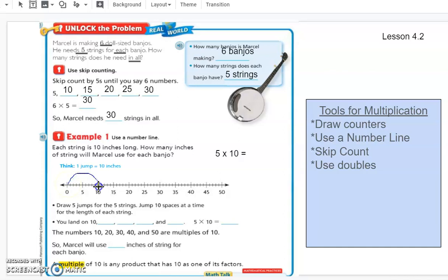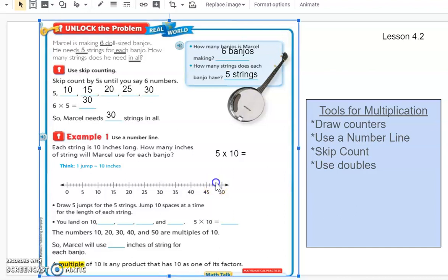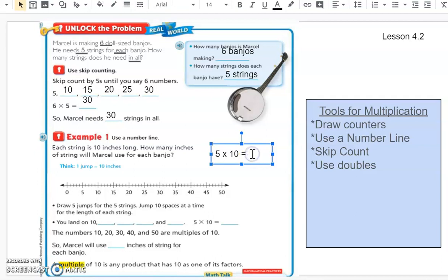So we have our number line here. It's divided by increments of 5. So we're going to be drawing 5 jumps of 10. So we'll go ahead and choose that. I can guarantee you my line is not going to be the best, but we'll give it a try here. So 5 jumps of 10: 10, 20, 30, 40, and 50. So he's going to need... I don't know where that went, but that's okay. We landed at 50. So he needs 50 inches of string.